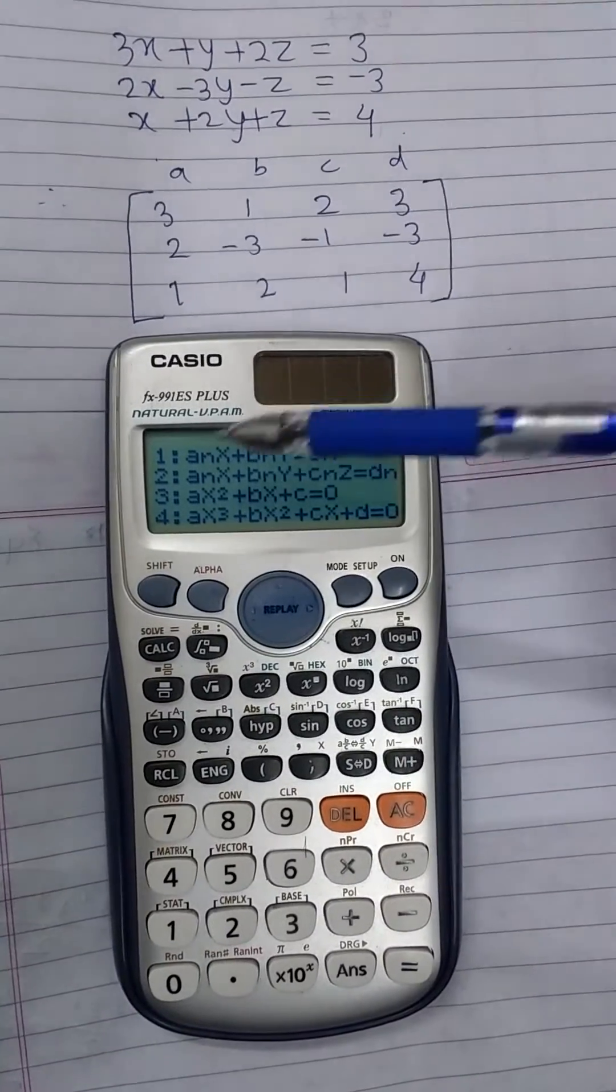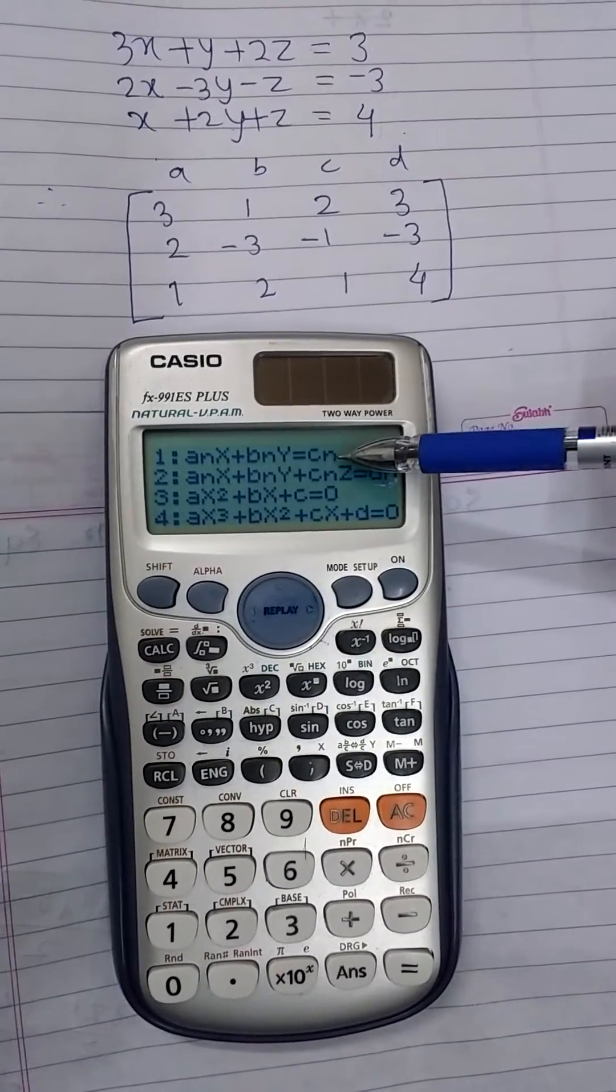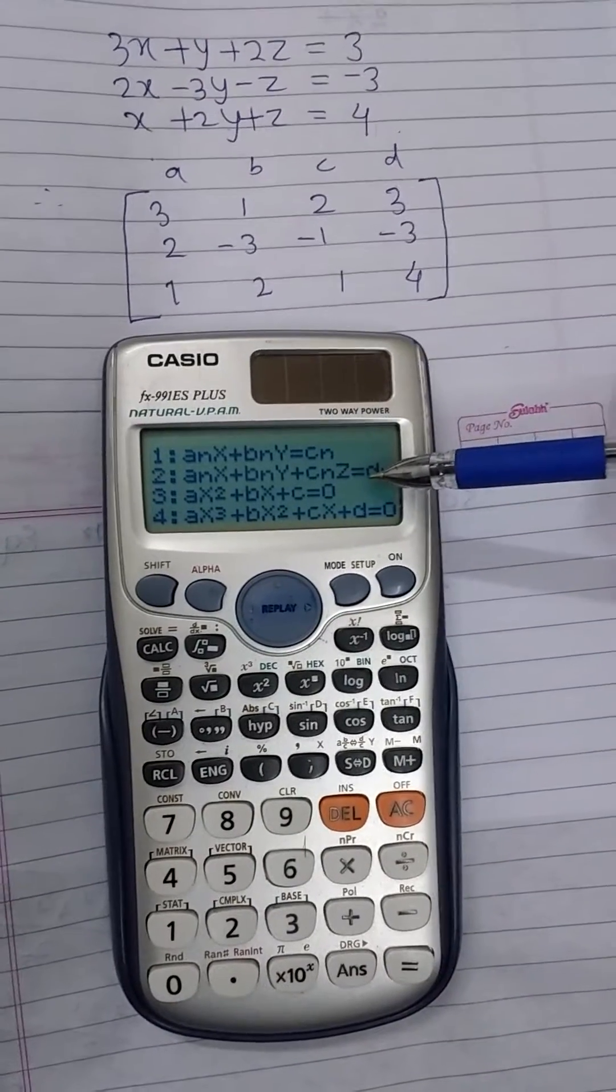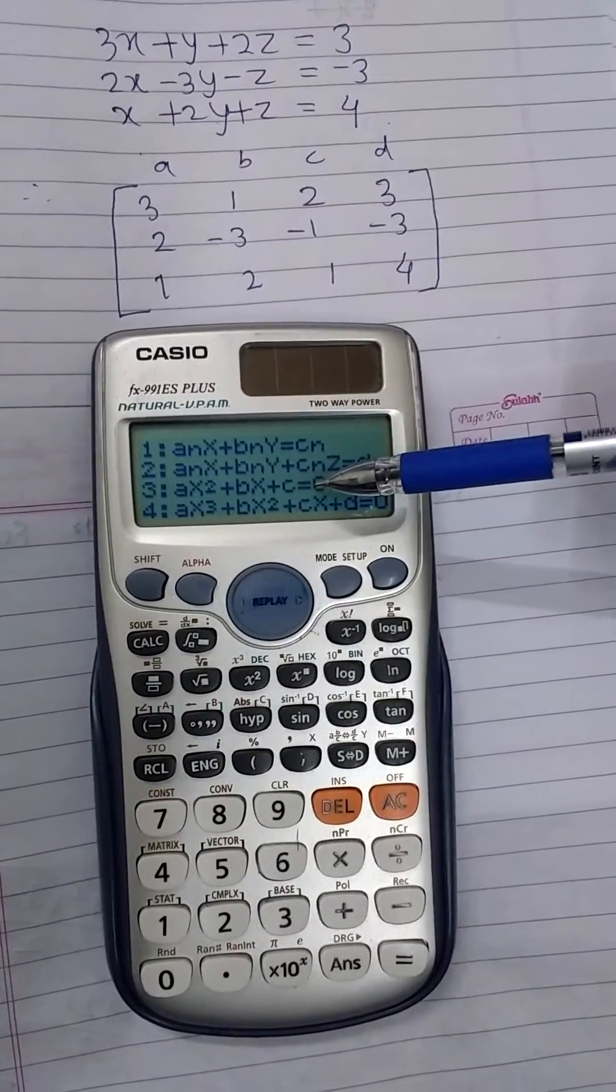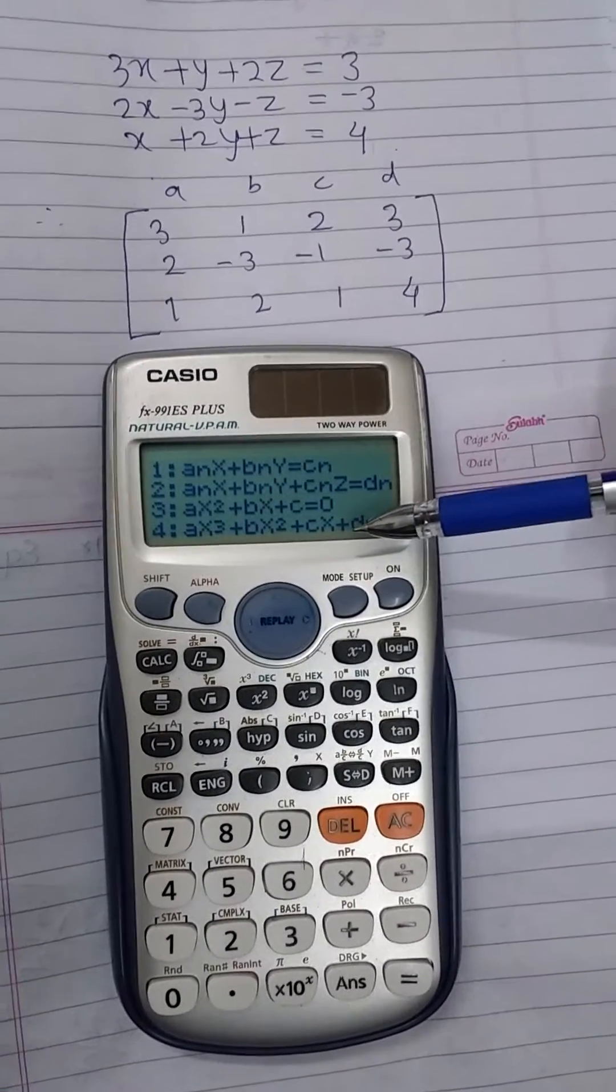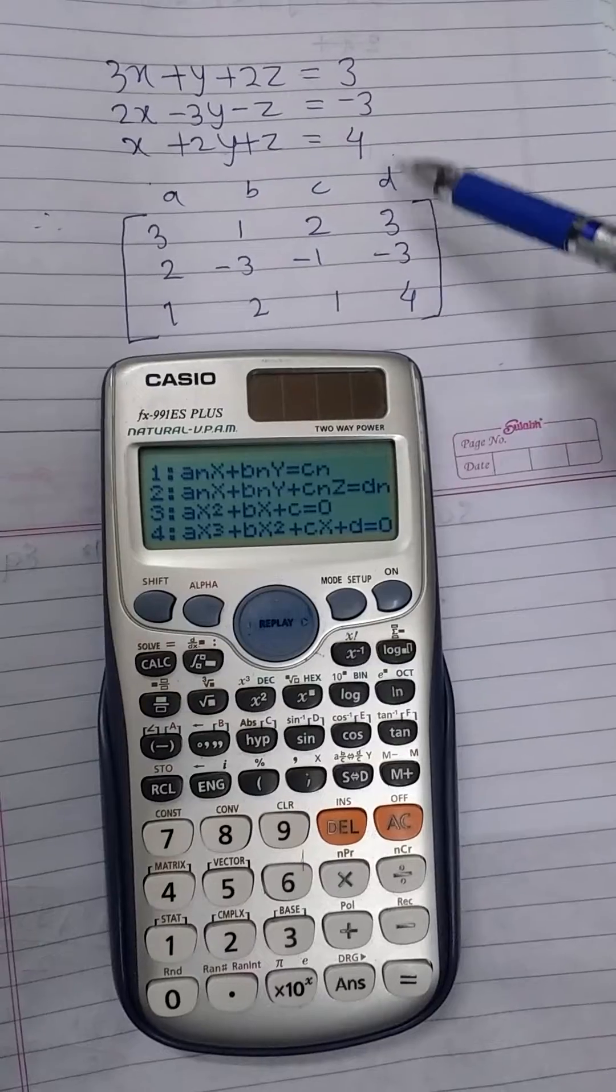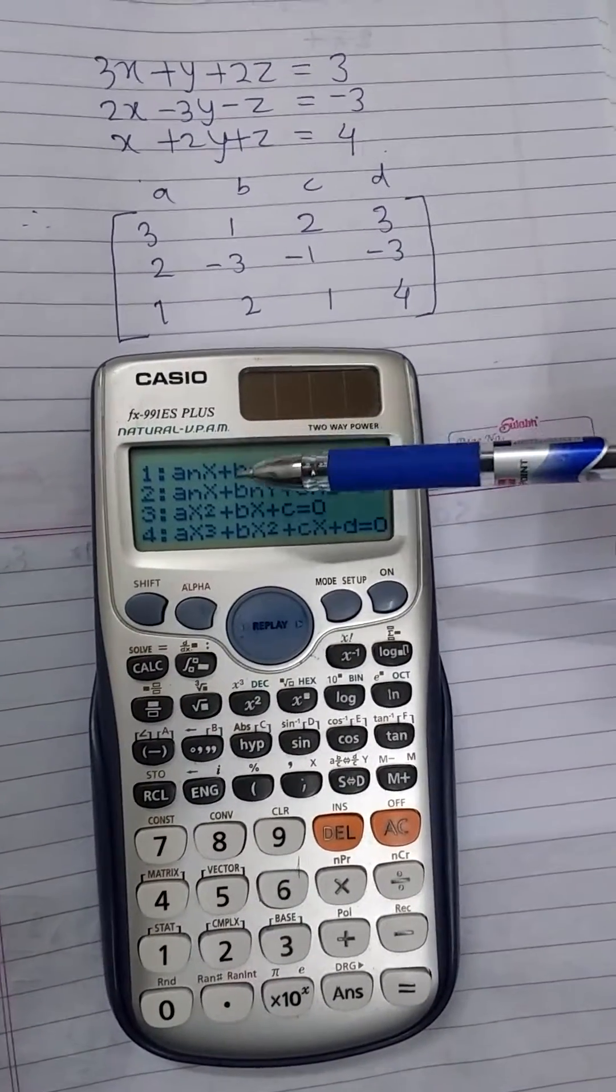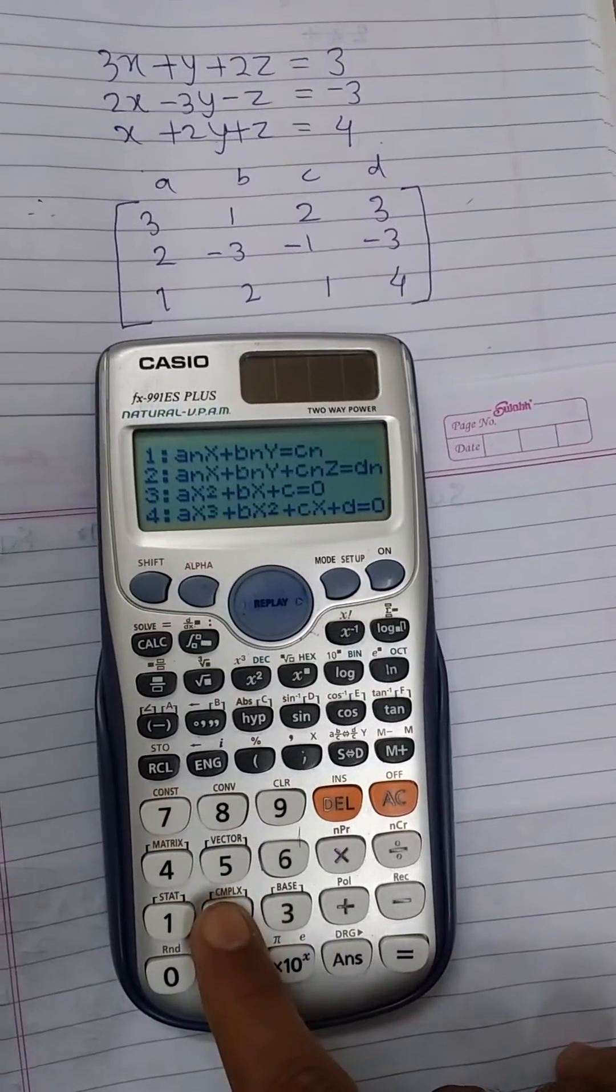Here we see 4 options. The first option is linear equation in 2 variables, second option is linear equation in 3 variables, third option is quadratic equation in variable x, and fourth is cubic equation in variable x. As we are going to solve a system of linear equations in 3 variables, we are choosing option number 2.